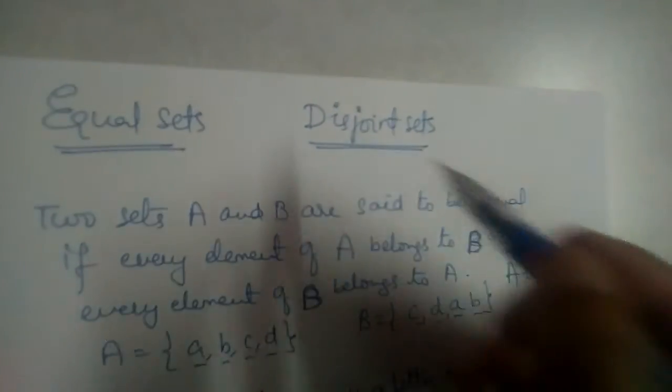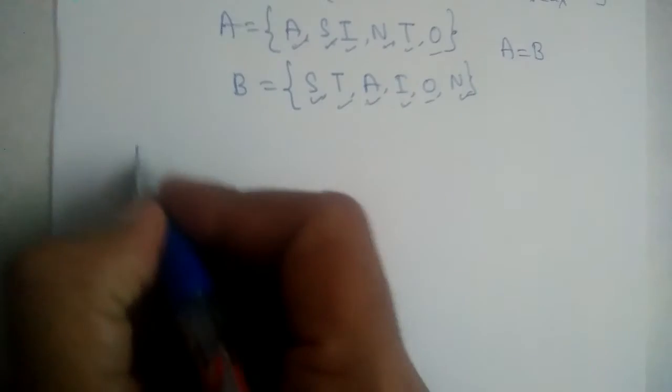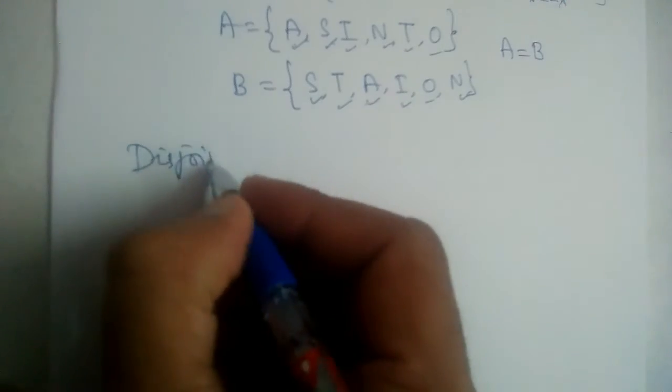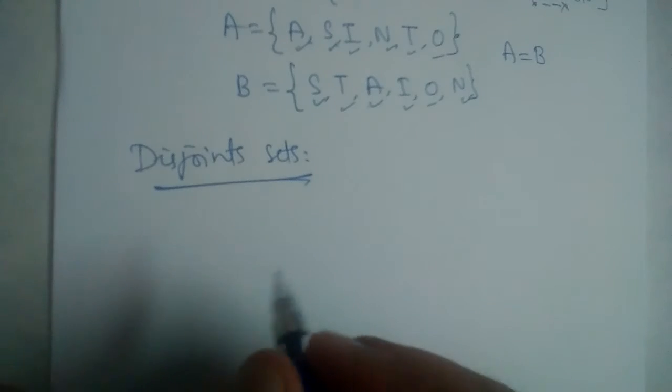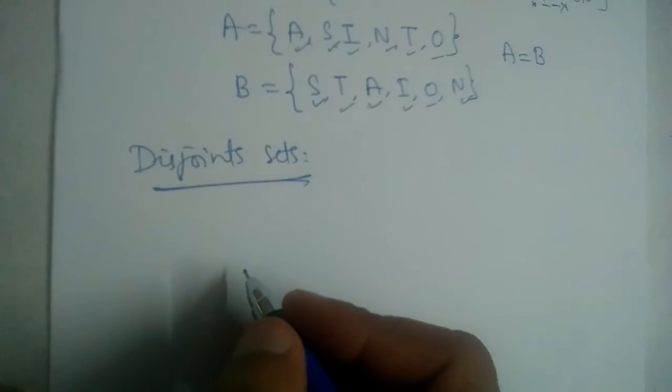Now disjoint sets. Disjoint sets are sets in which no element is equal, no element is same.